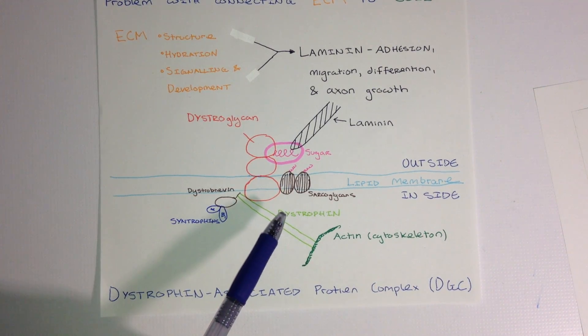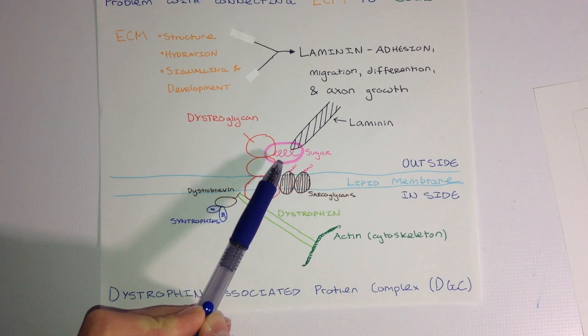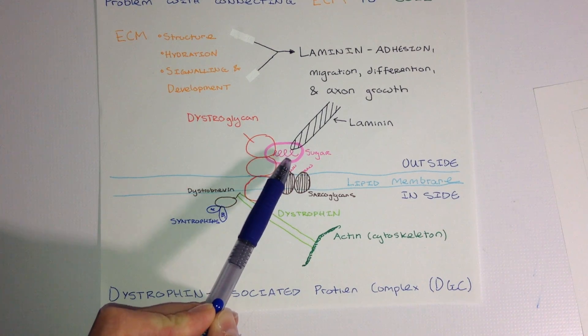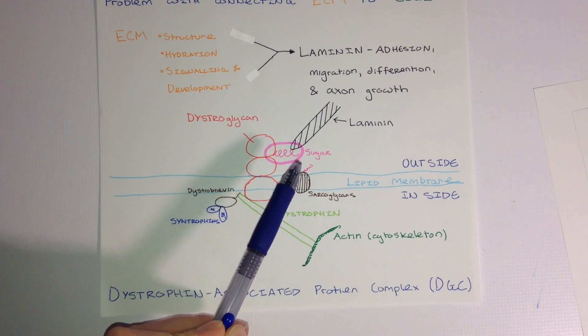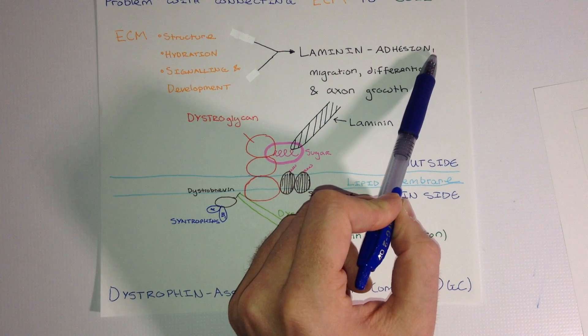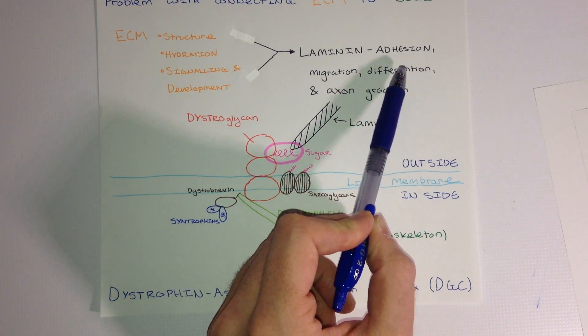In congenital muscular dystrophy, the enzyme that adds on this sugar group is mutated, and it does not form this connection. This means that the extracellular matrix cannot adhere properly to cells, resulting in different dystrophies.